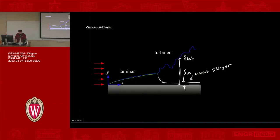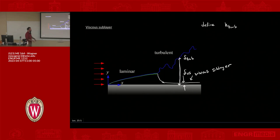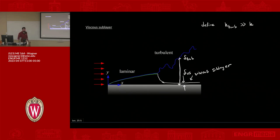Back to this: we have our viscous sublayer and the turbulent region. We can define something called the turbulent conductivity, K_turbulent — the effective ability to transport heat in the turbulent region. K_turbulent is always much greater than the actual molecular conductivity, so we have a much greater ability to transport heat in the turbulent region. Similarly, mu_turbulent, our turbulent viscosity, is also much greater than regular mu.